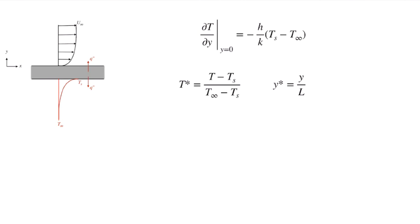A length is non-dimensionalized by dividing by a length scale L, which may differ between problems. Our non-dimensional position y* equals y over L. Taking the derivative of T* gives dT divided by the constant (T infinity minus Ts), and the derivative of y* gives dy divided by the constant L.